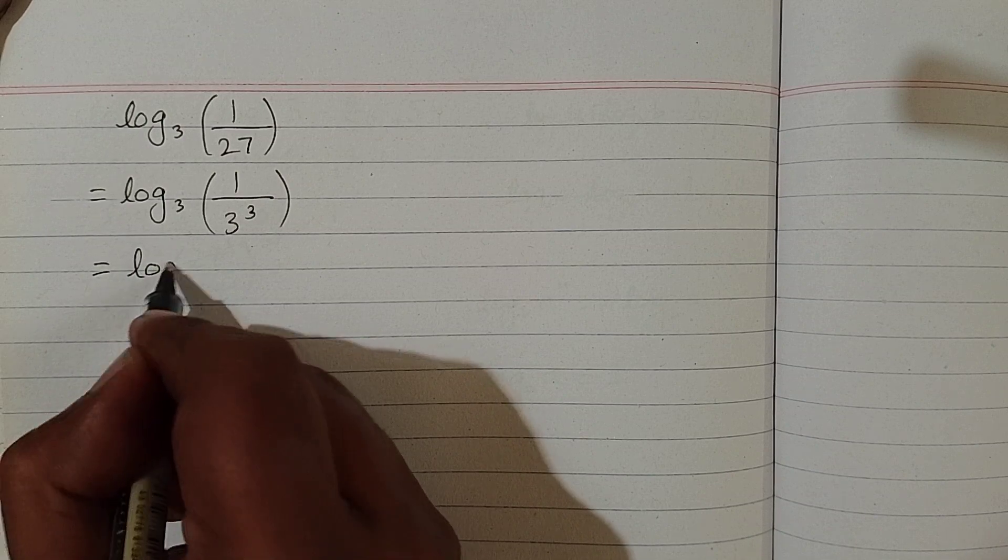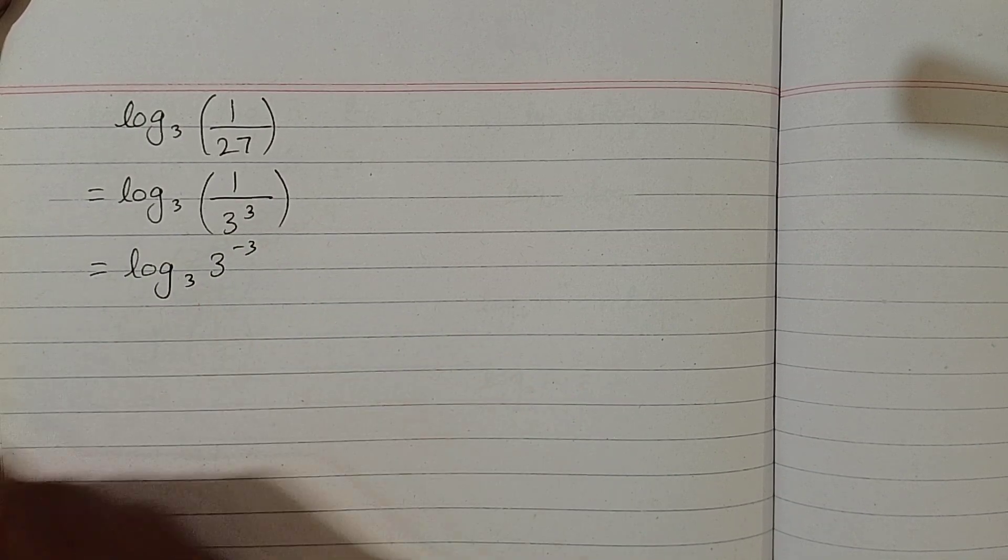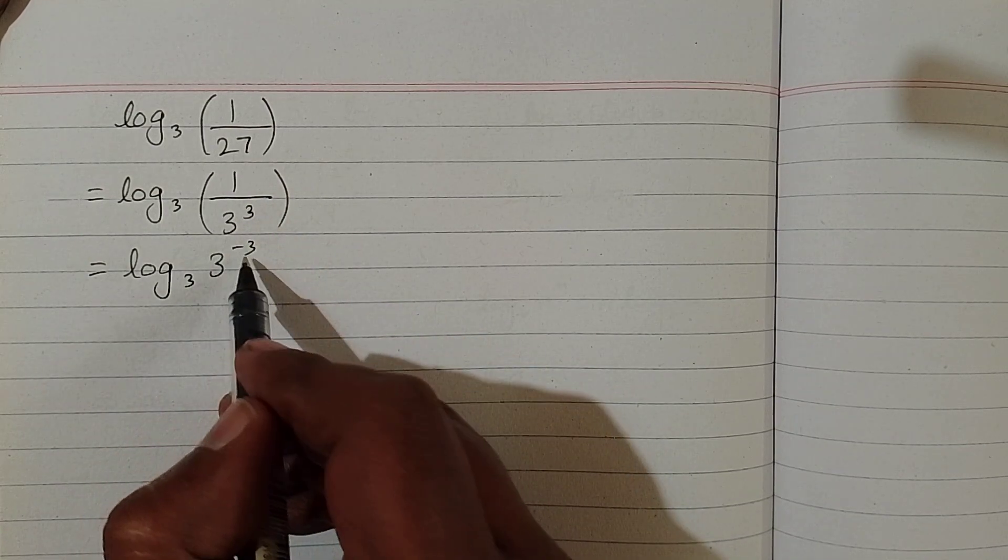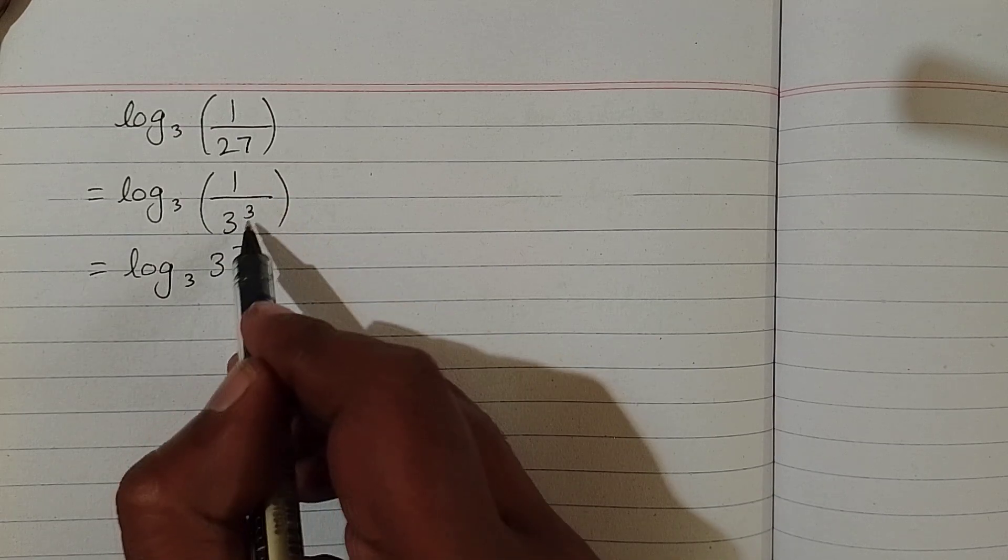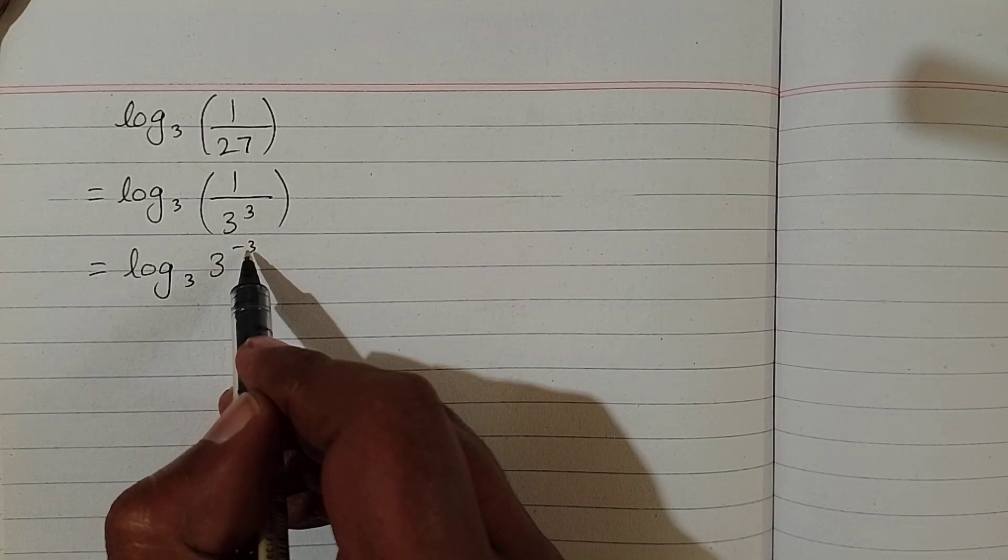This can be written as log of 3 to the power minus 3 to the base 3, because 1 upon 3 cube can be written as 3 to the power minus 3. If we take this 3 in the numerator, the power will become negative, so the power of 3 is negative 3.